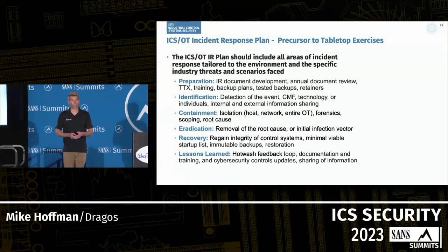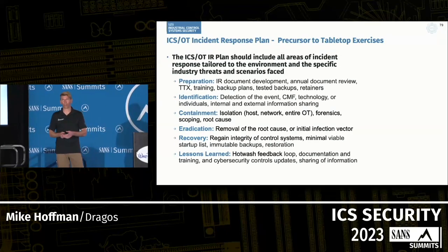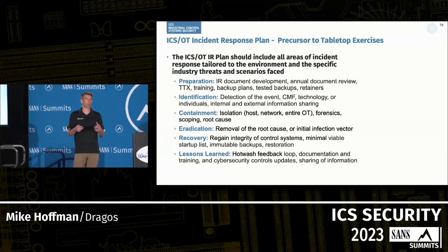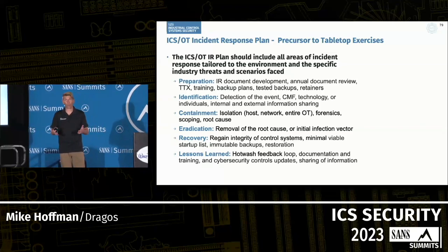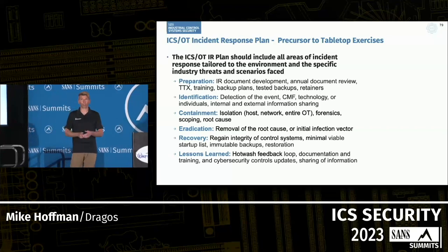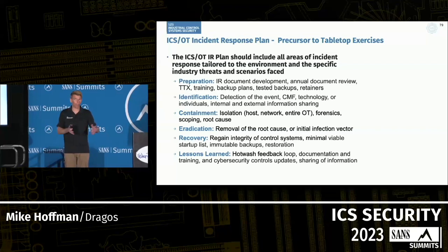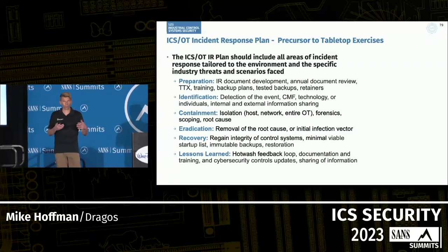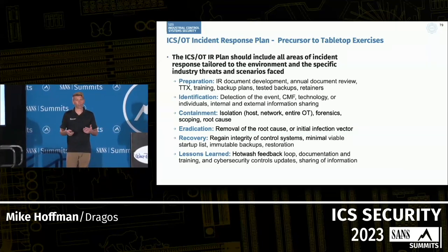We also have identification: where, how, and who is going to identify the event? How does it get elevated from an event to an incident? Where is that threshold? All those things need to be documented in your plan. Moving on to containment — how do you isolate from a host or VLAN perspective, or even break the IT-OT bridge? Can your plant or environment handle that breakage?